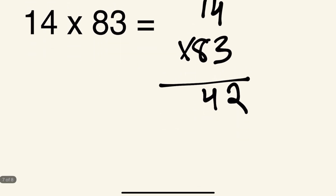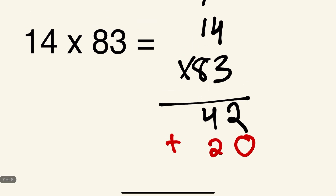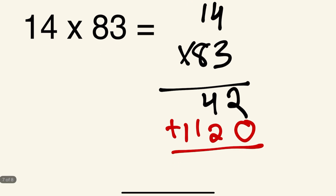Then 3 times 1 is 3, plus the carried 1 is 4 — so we have 42. Next, add the 0, then 8 times 4 is 32 — write the 2 and carry the 3. Then 8 times 1 is 8, plus 3 gives 11. Now add: 2 plus 0 is 2, 4 plus 2 is 6, bring down the 1. The answer is 1,162.